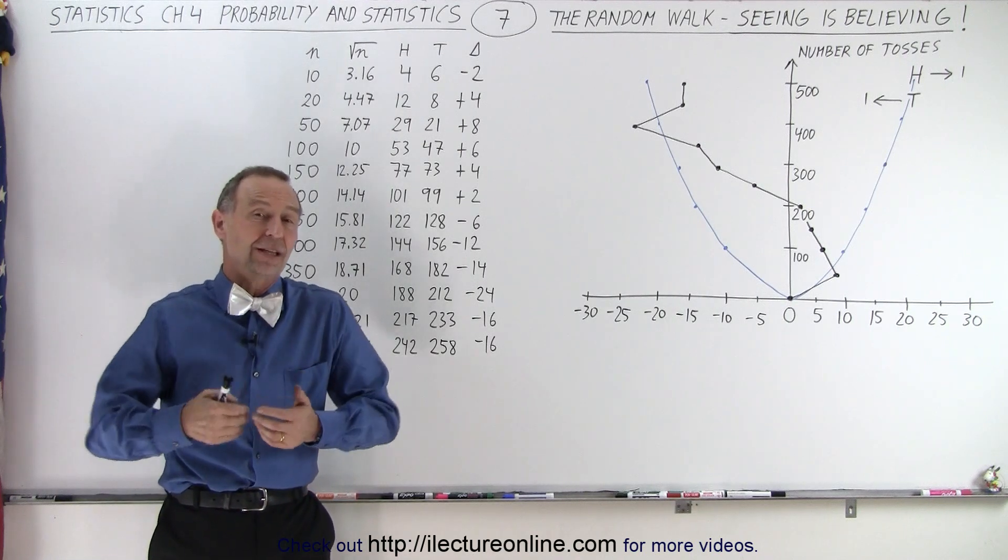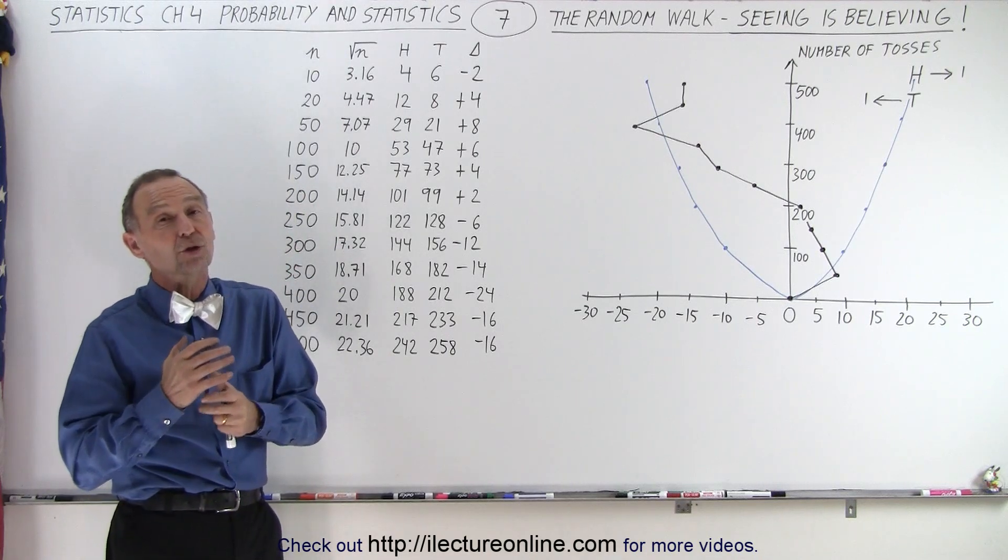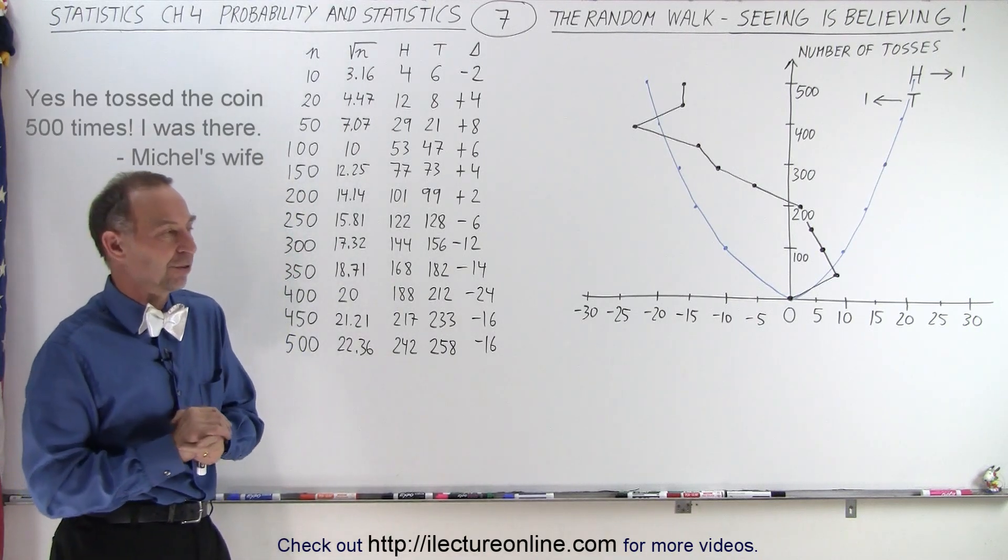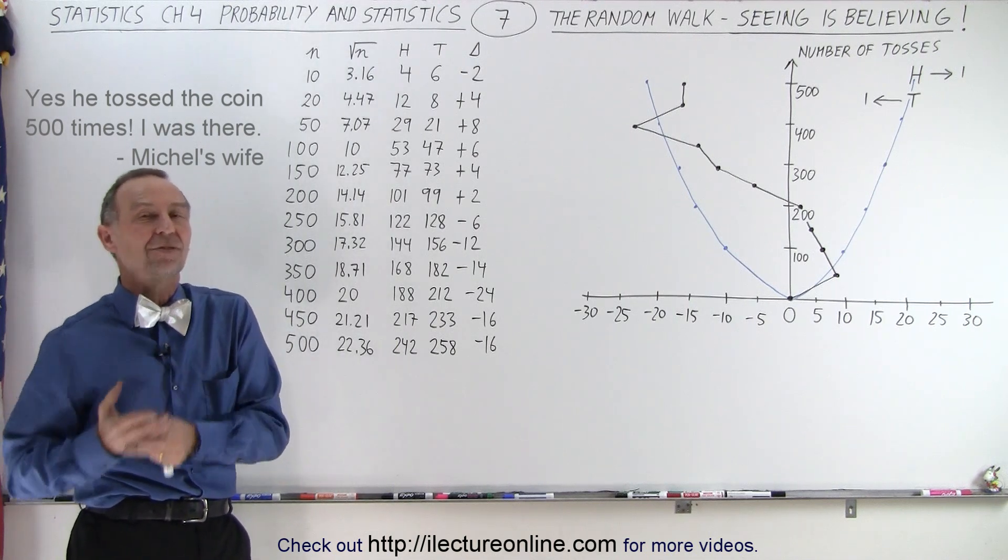So what I did was, I did an experiment. I'm not going to do it here because it would take a very long time, but I tossed the coin 500 times, and I kept track of how many times I got heads and how many times I got tails.